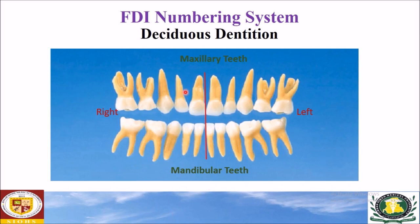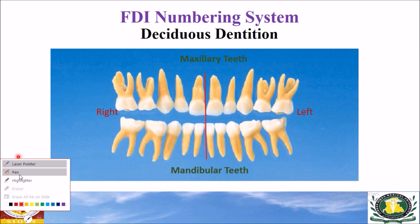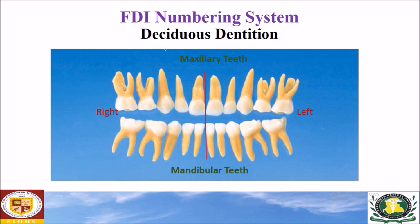This tooth is the maxillary right central incisor. In the FDI notation system, the quadrant is referred to as the maxillary right quadrant, which is number five. This central incisor is the first tooth from the midline, so it is referred to as five one.